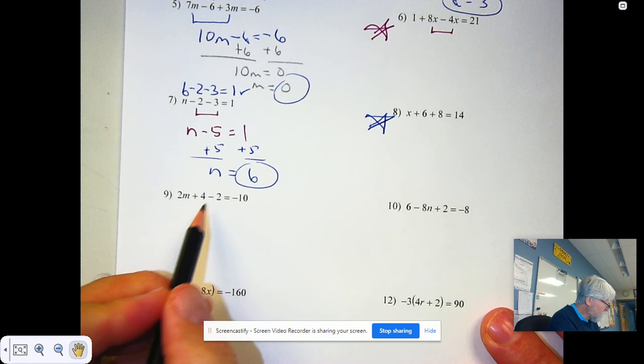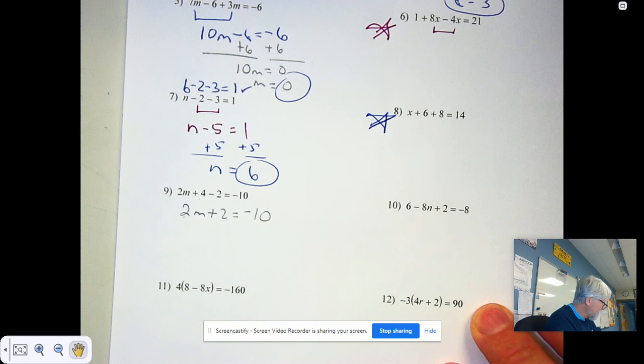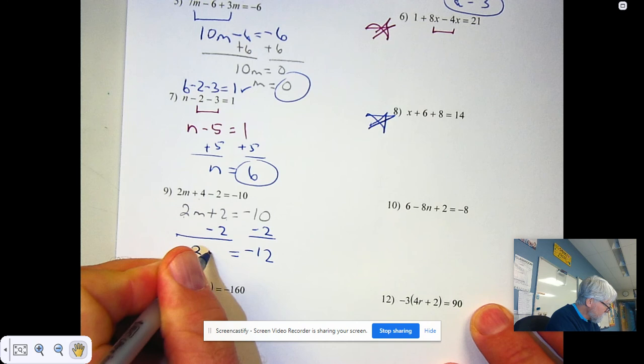Combine like terms for number 9. 4m minus 2m is 2m. So 2m plus 2 is negative 10. Remember, if you're multiplying and adding, we have to undo the adding first. When I subtract 2 from negative 10, I get negative 12.